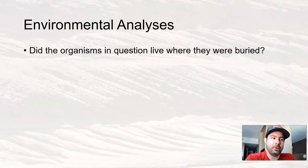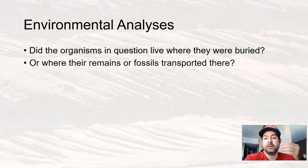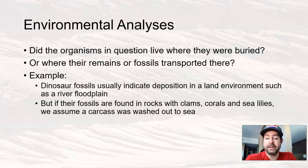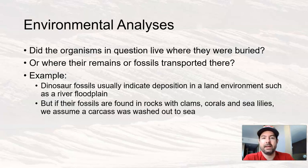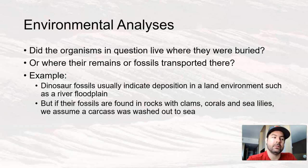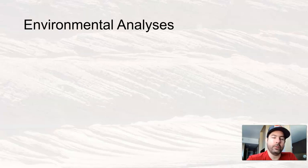Environmentally, those types of rocks also give us information. Do the organisms we're seeing — the fossils in question — live where they were buried, or were the remains transported there? Does this rock tell me about things that were living where this was deposited, or things that were transported there? For example, if you find dinosaur fossils, that usually indicates deposition in some sort of land environment — maybe a river, floodplain, edge of a stream, edge of a lake. However, if you're finding dinosaur fossils in the same rocks with clams, corals, sea lilies, or other sea life, then we'd assume that carcass was washed out to sea, where it sank to the bottom, was buried in sediment, and later became sedimentary rock. So looking at these rocks and fossils helps us with an environmental analysis.